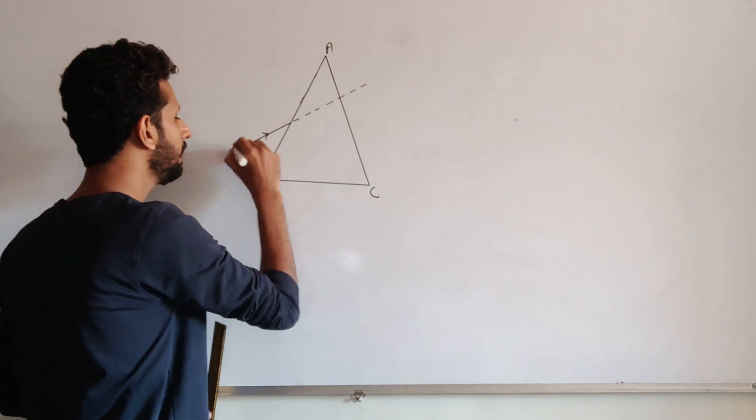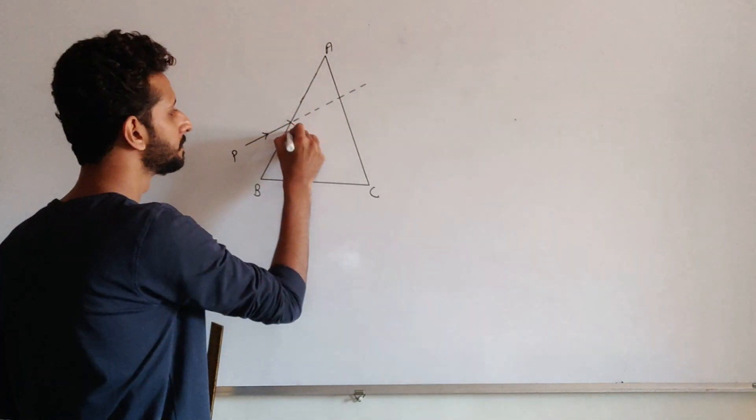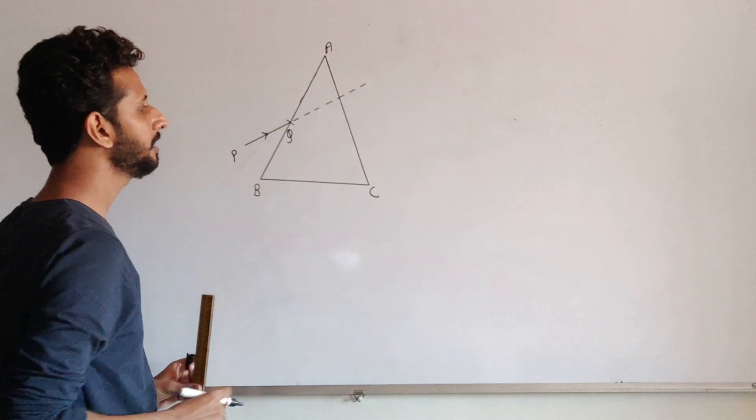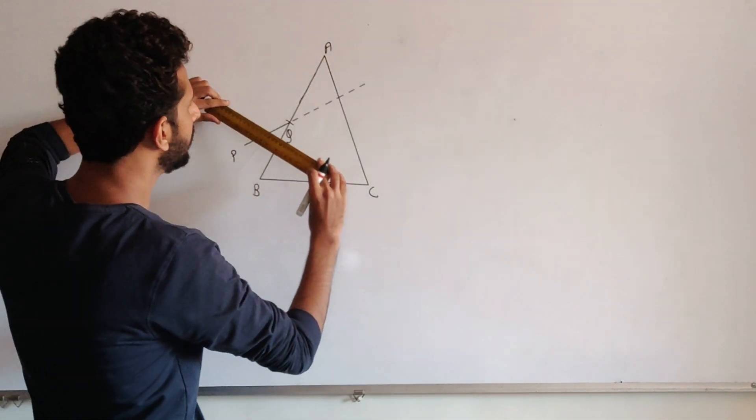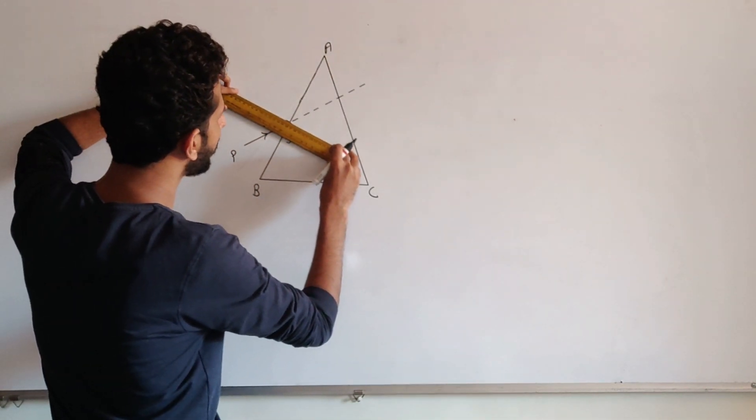Now, if PQ is your incident ray, then at the point of incidence Q, you have to draw the normal. Now, be precautious while drawing your normal.